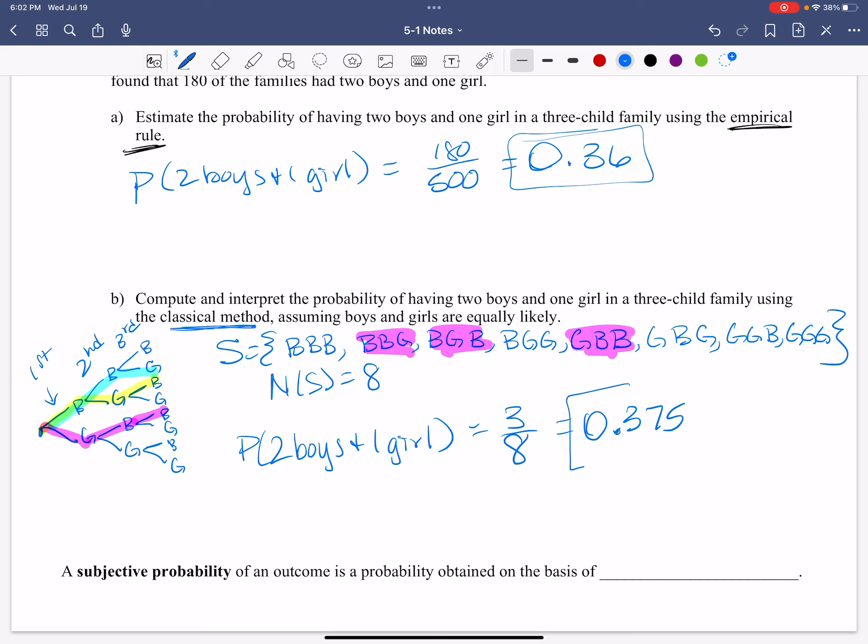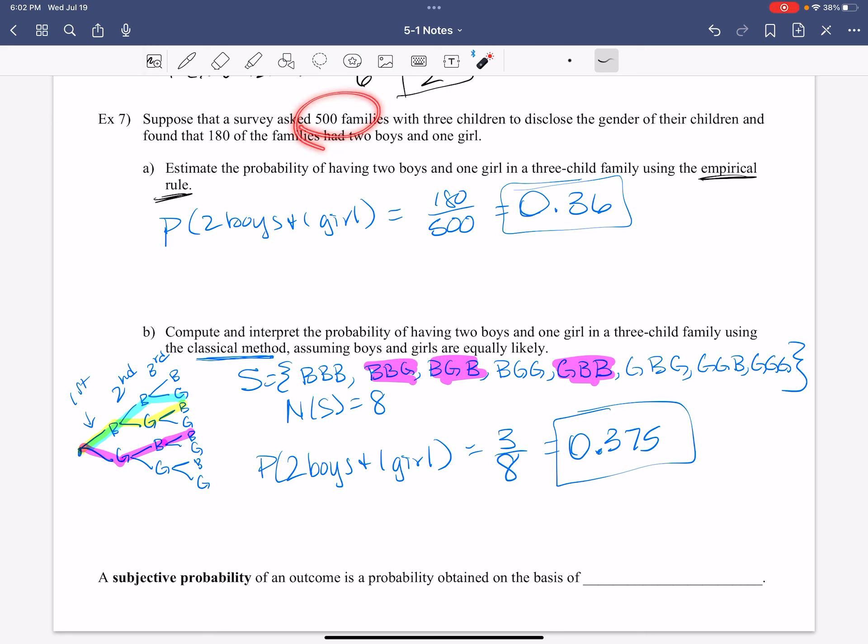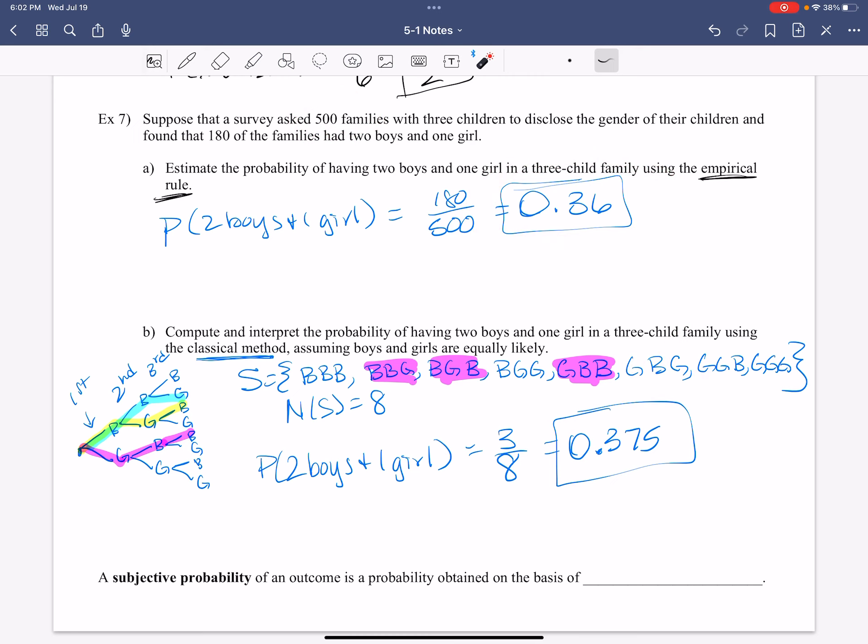What was my probability based on the sample that I had of those 500 families? 0.36. If I just kept going, yep, then we'd end up with 0.375. That, ladies and gentlemen, is the law of large numbers.